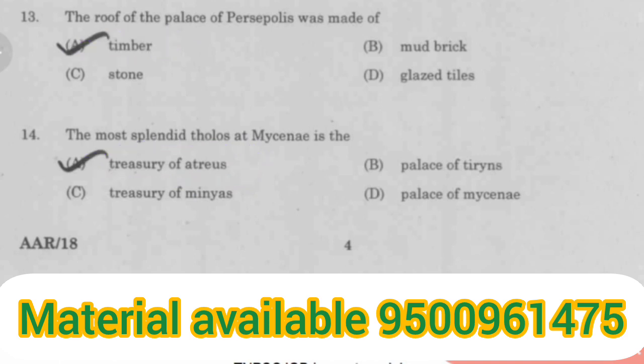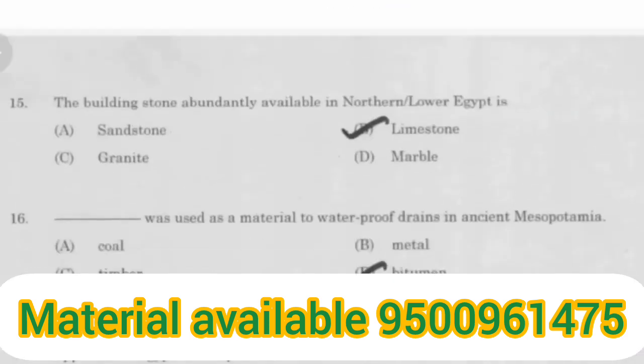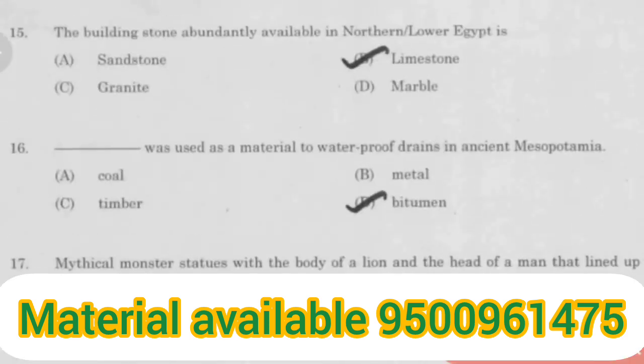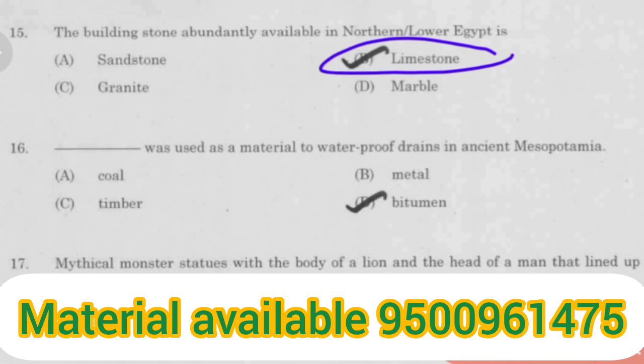The building stone apparently available in northern Lower Egypt is limestone. Bitumen was used as a material to waterproof drains in ancient Mesopotamia.